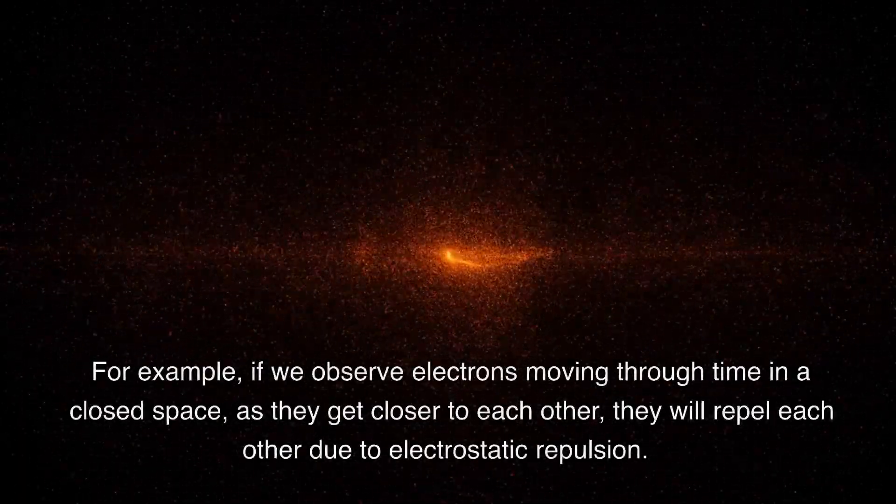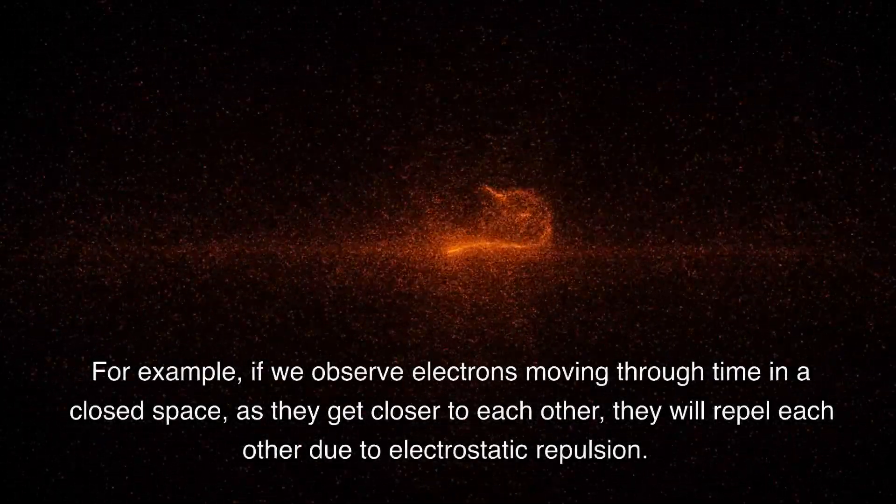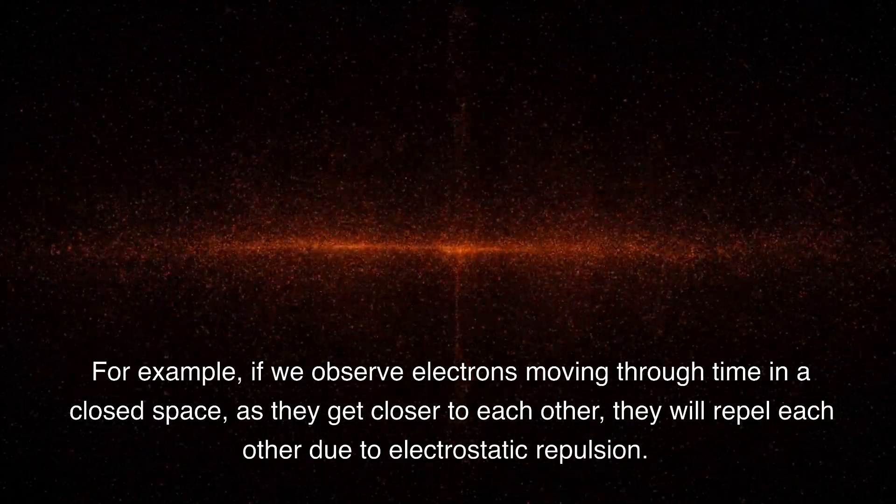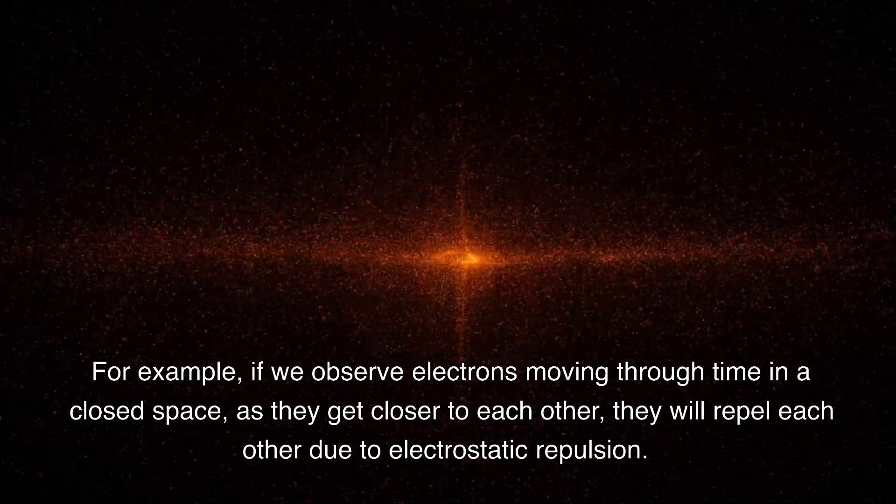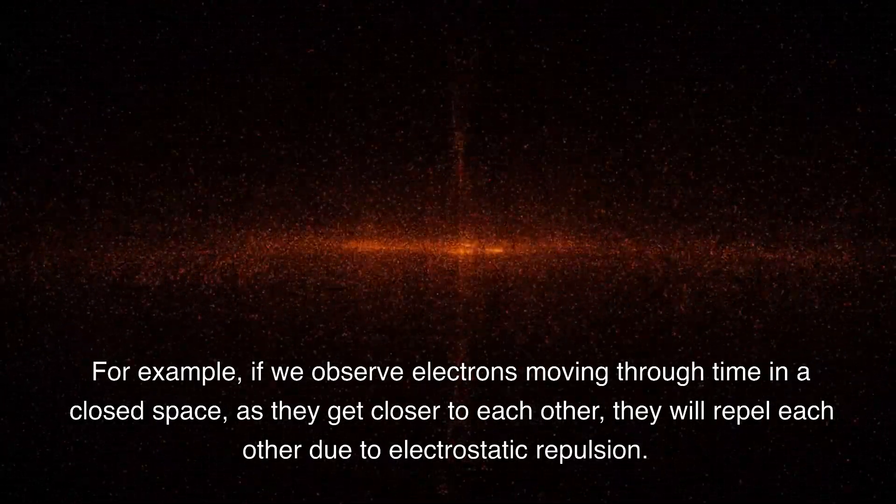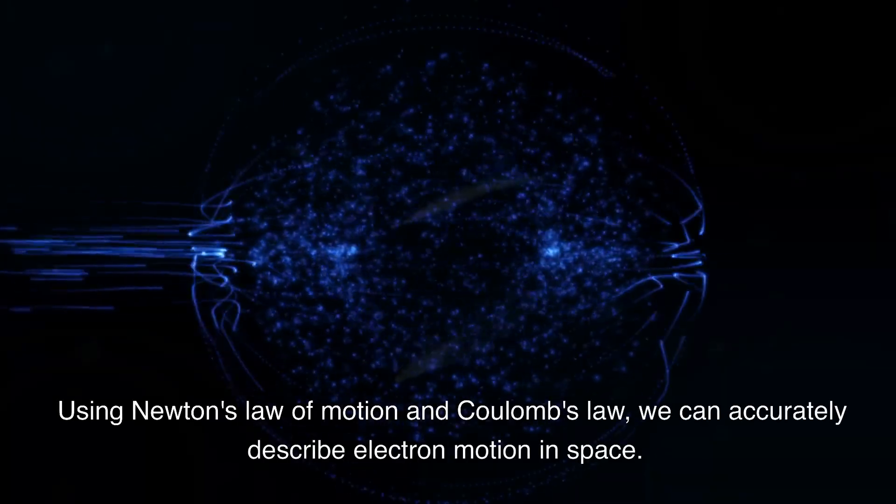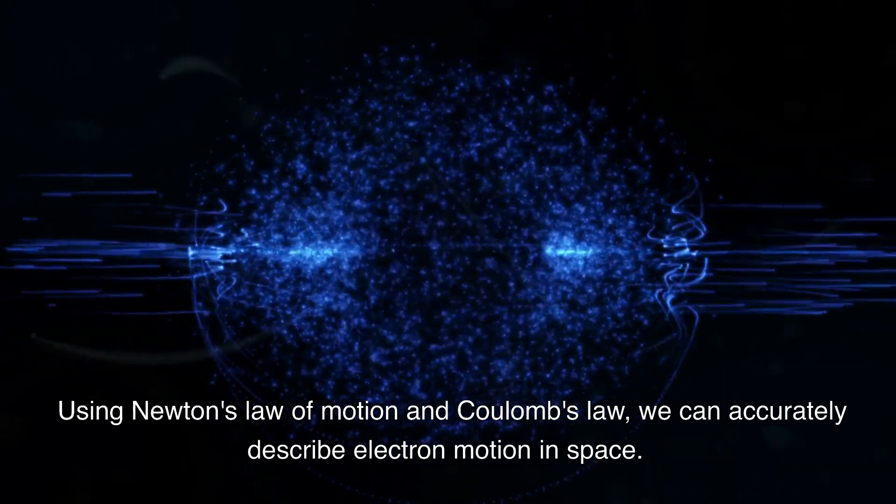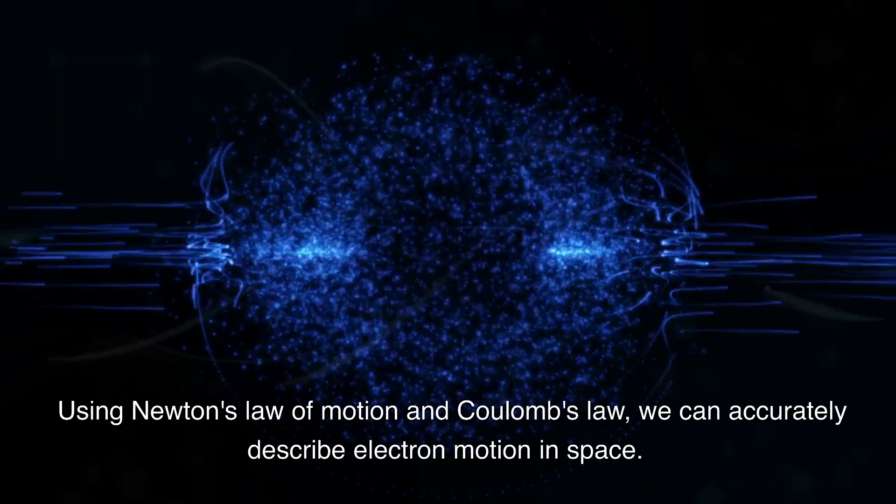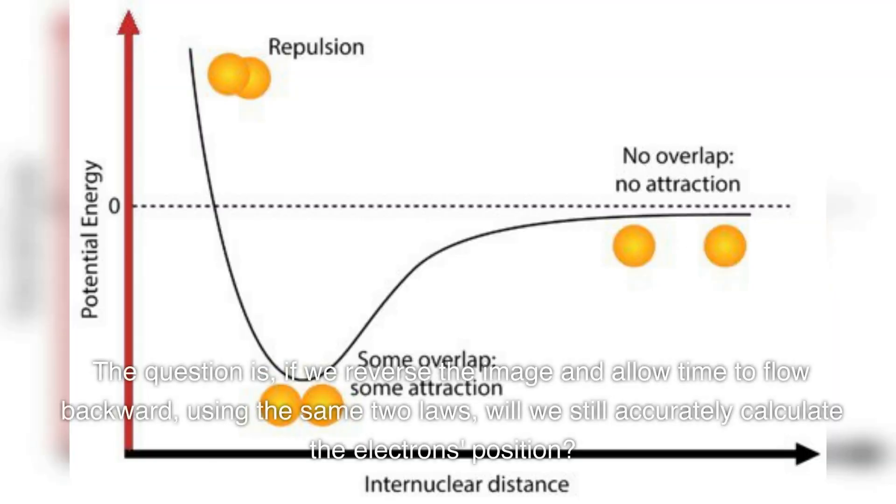For example, if we observe electrons moving through time in a closed space, as they get closer to each other, they will repel each other due to electrostatic repulsion. Using Newton's law of motion and Coulomb's law, we can accurately describe electron motion in space. The question is, if we reverse the image and allow time to flow backward, using the same two laws, will we still accurately calculate the electron's position?